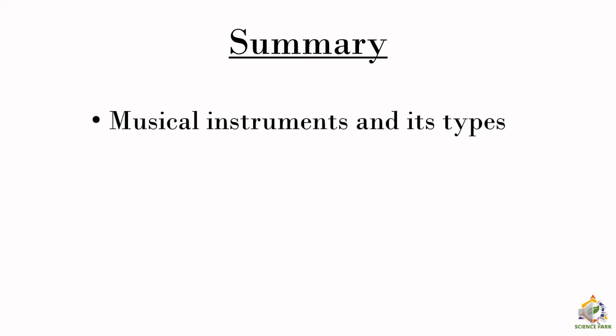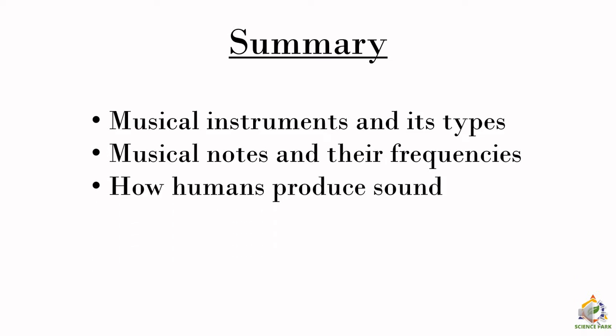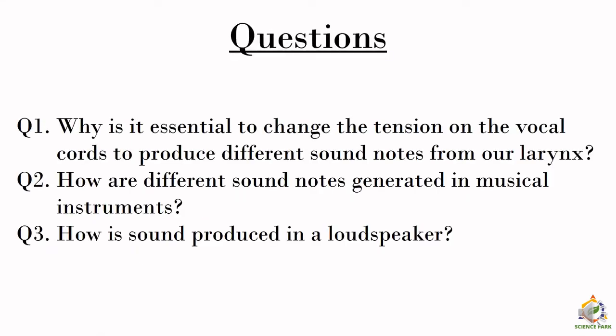To summarize: we saw a musical instrument called Jal Tarang and the four types of musical instruments with their examples. We then covered the seven musical notes and their frequencies, and how humans produce sound via the voice box or larynx. We made a whistle and connected it to how vocal cords work. Finally, we explored the functioning of a loudspeaker. Some questions have been provided — please note them down in your notebook and write the answers. Thank you.